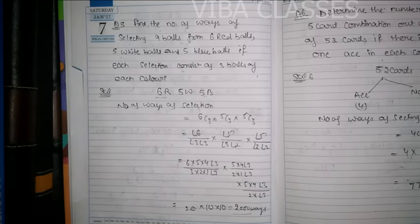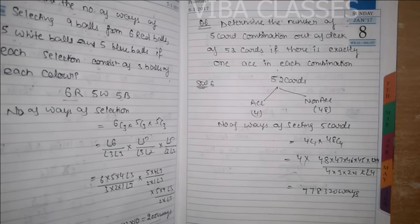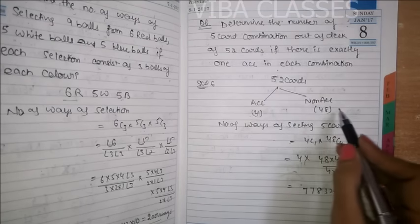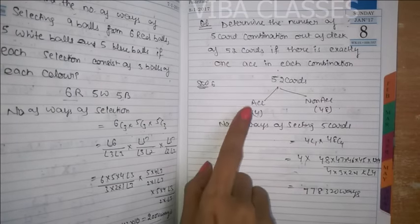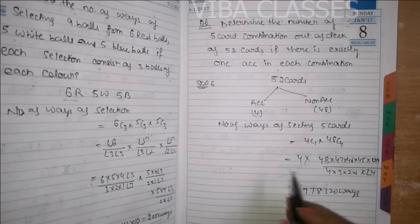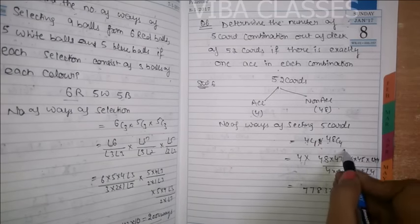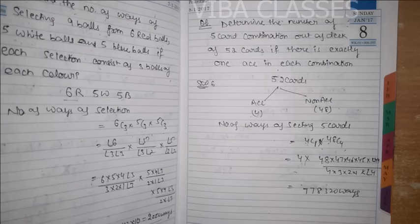Question number 6: Determine the number of 5-card combinations out of a deck of 52 cards if there is exactly one ace in each combination. Aapko 52 cards mein se 5 card draw karne hain. Compulsion hai ki un 5 cards mein ek ace zaroor hona chahiye. 52 cards ko do groups mein baanto: 4 ace aur 48 non-ace. 1 ace select karne ke liye 4C1, aur baaki 4 cards ke liye 48C4. Combination formula lagaane par aapko 778320 ways milenge.